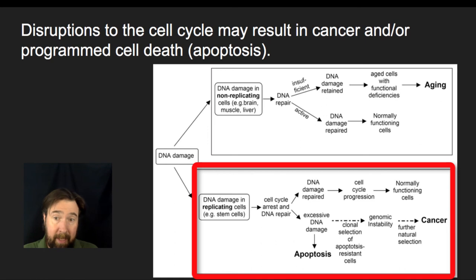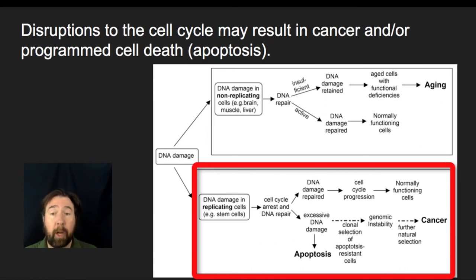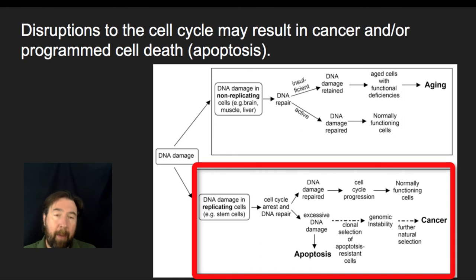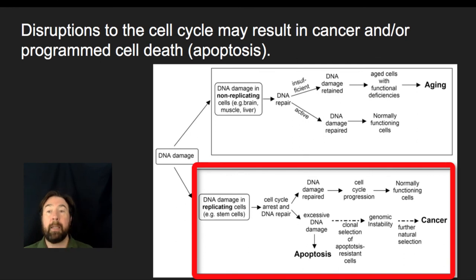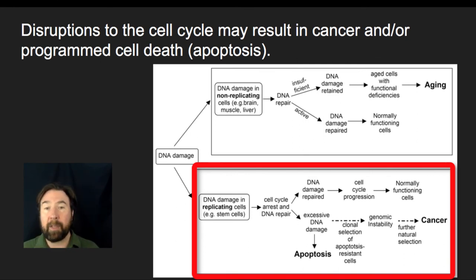But if there's excessive DNA damage, this might indicate that this cell is not functioning, and this cell should undergo apoptosis, or programmed cell death. If the apoptosis signals do not work properly, this cell could continue to divide — a case where the checkpoints aren't working out — and this could ultimately lead to cancer.